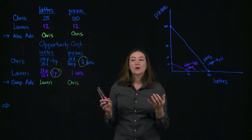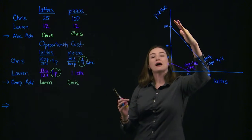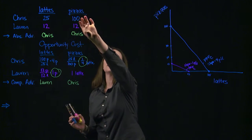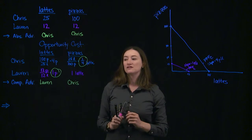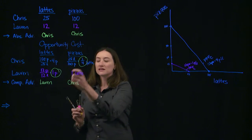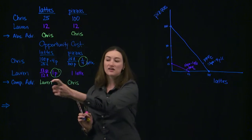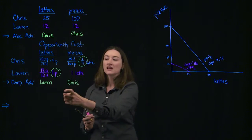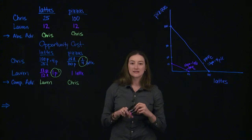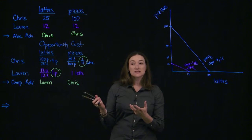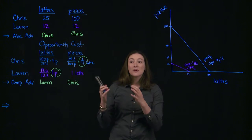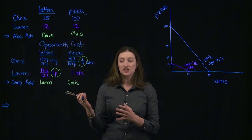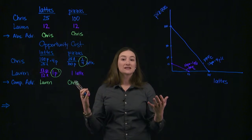When I think about who has the absolute advantage, that's given by how much each of them can produce — and Chris can have the absolute advantage in both goods. But he can't have the comparative advantage in both goods. In this case, he only has a comparative advantage in producing pizzas, and Lauren has the comparative advantage in producing lattes. We can use this to their advantage: by allowing these individuals to specialize in the good for which they have a comparative advantage, we can see that they'll be able to gain from trade.